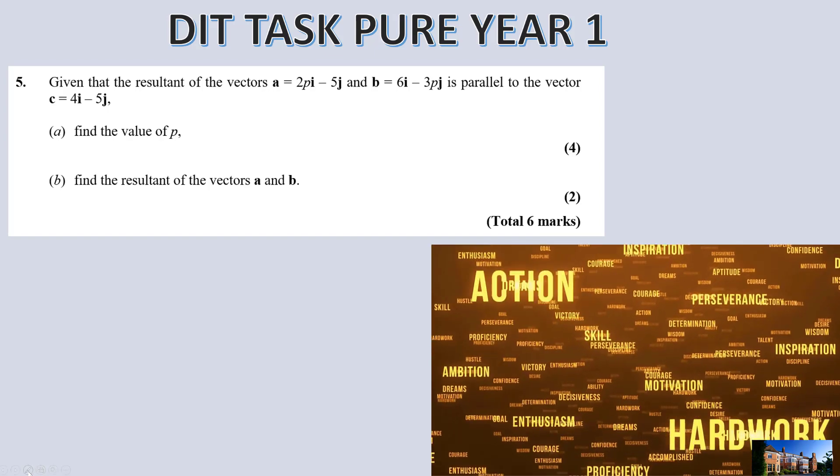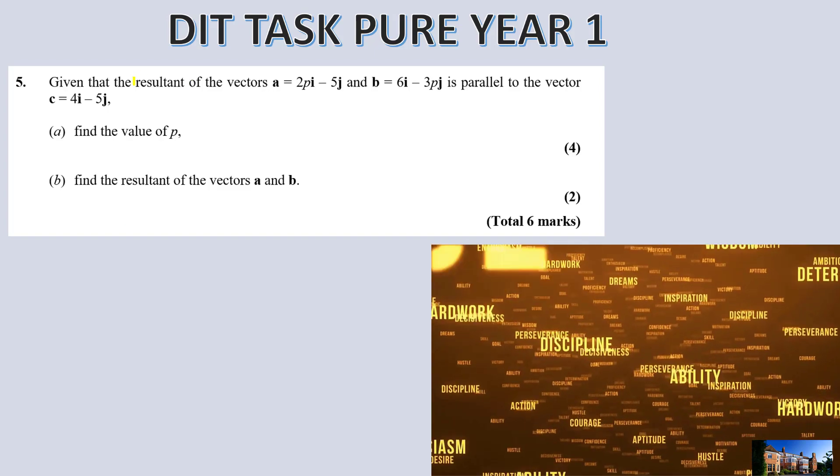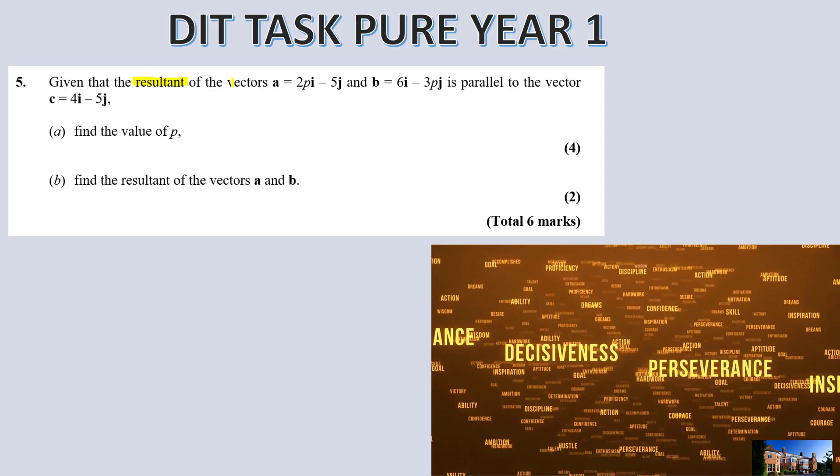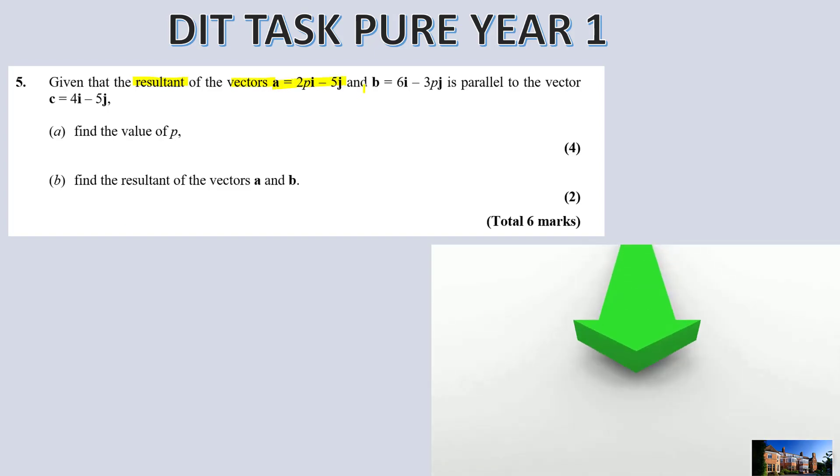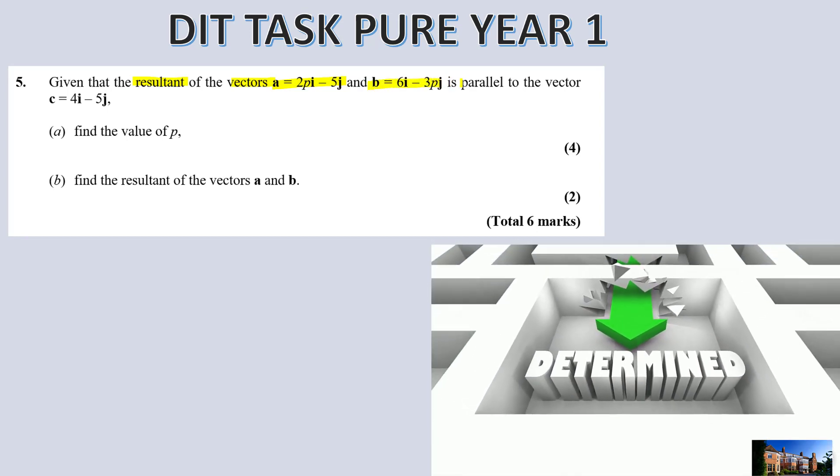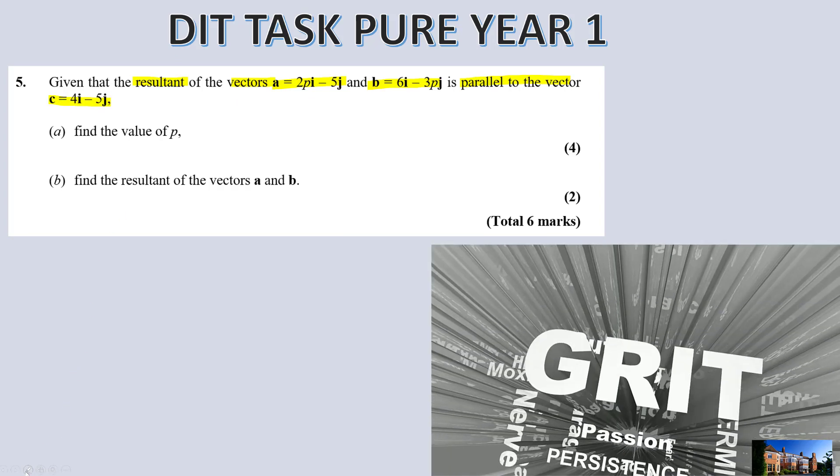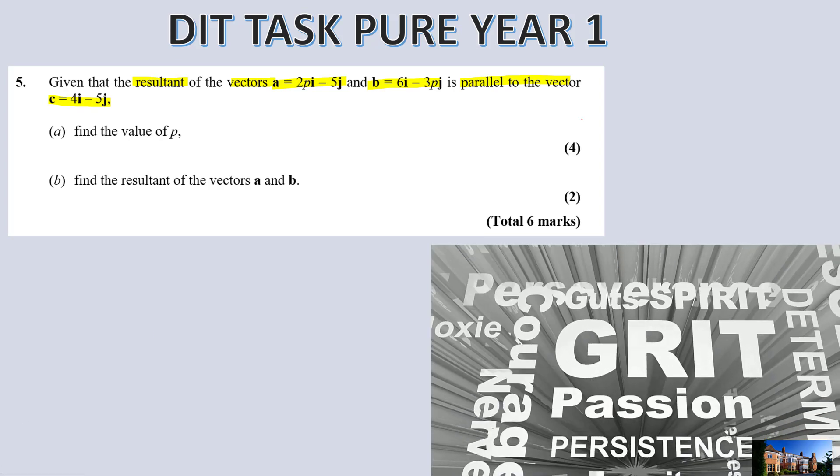Okay, let's look at this question that you asked for guidance on. Now read this as resultant of the vectors, so that means a and b is combined and it's the same, it's parallel to this vector c. Now if I can try to break down this question so you can understand.